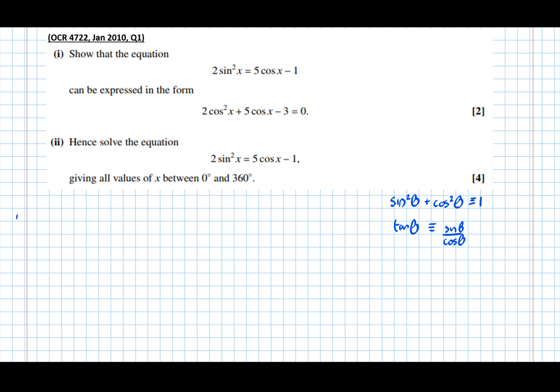So here, part 1, it says show that the equation 2 sin squared x equals 5 cos x minus 1 can be expressed in that particular form there. So notice that there's a sin squared here. That tells me that I'm going to need this type of trig identity here that involves the sin squared and the cos squared.